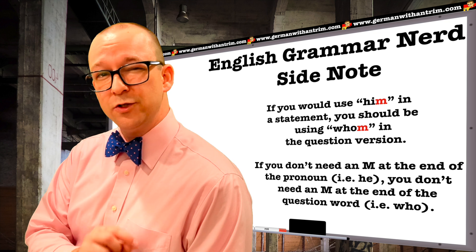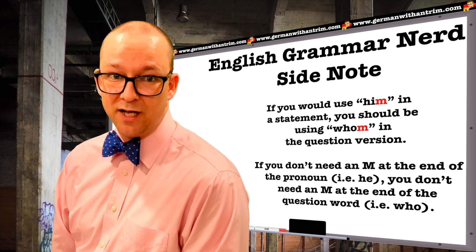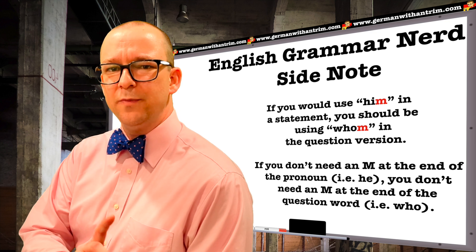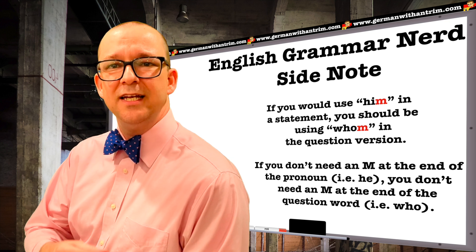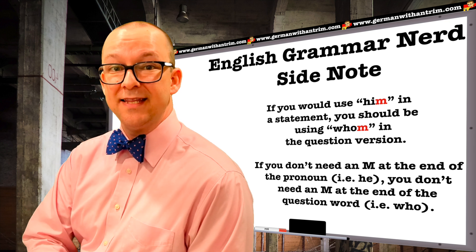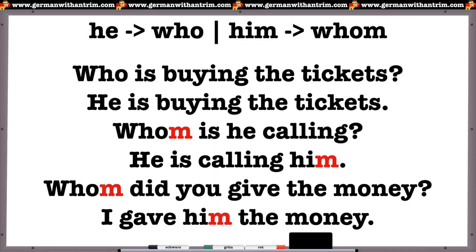English grammar nerd side note: This trick actually works in English too. If you would say 'him' in the statement version, you should use 'whom' in the question. Check for an M at the end of the pronoun: 'Who is buying the tickets?' → 'He is buying the tickets.' No M on 'he,' so no M on the question word. 'Whom is he calling?' → 'He is calling him.' Him has an M, so whom also has an M. 'Whom did you give the money?' → 'I gave him the money.' Again, M on both.